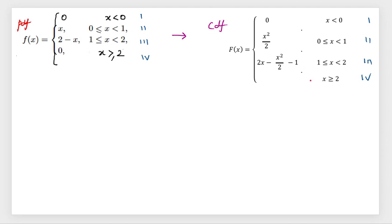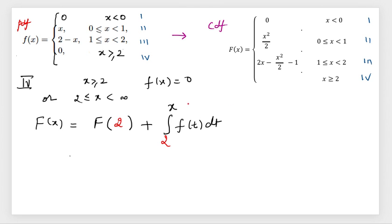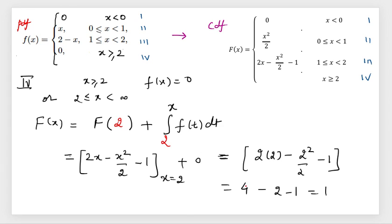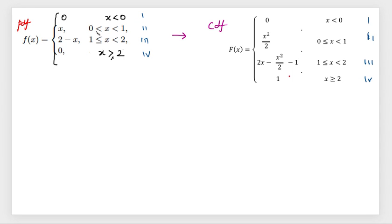For the last interval, x greater than 2, there is no function, so the integration part is zero. We only plug in x equals 2 into the previous interval CDF. When we plug in, we get the value 1. This confirms that the last interval CDF is always 1, and we get this answer.